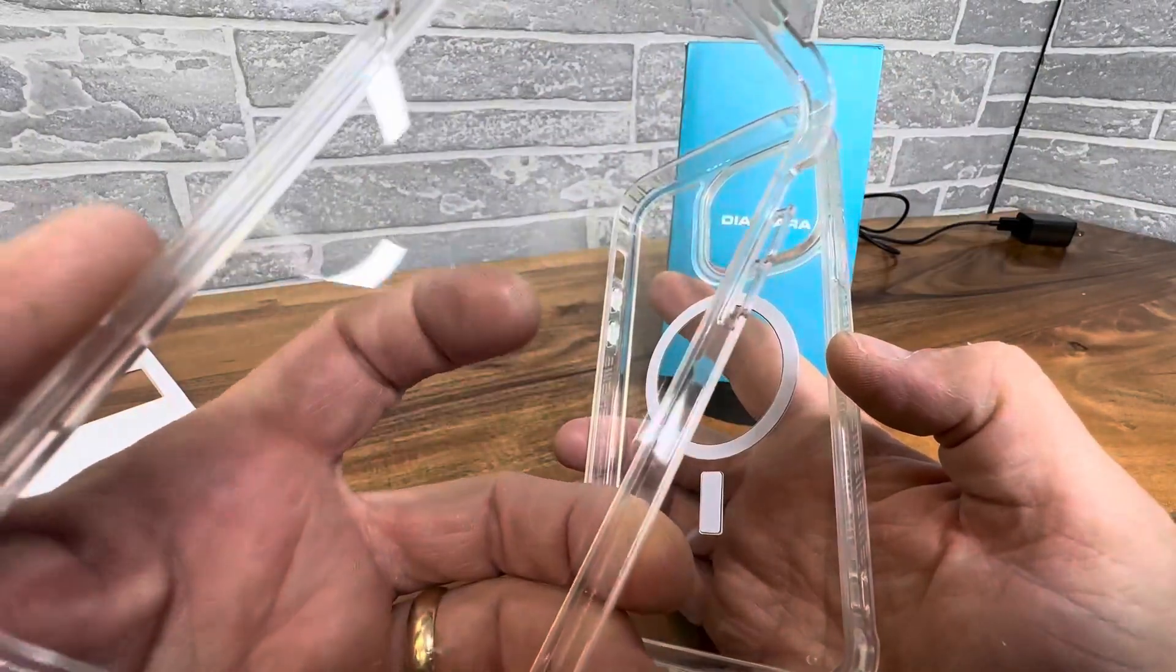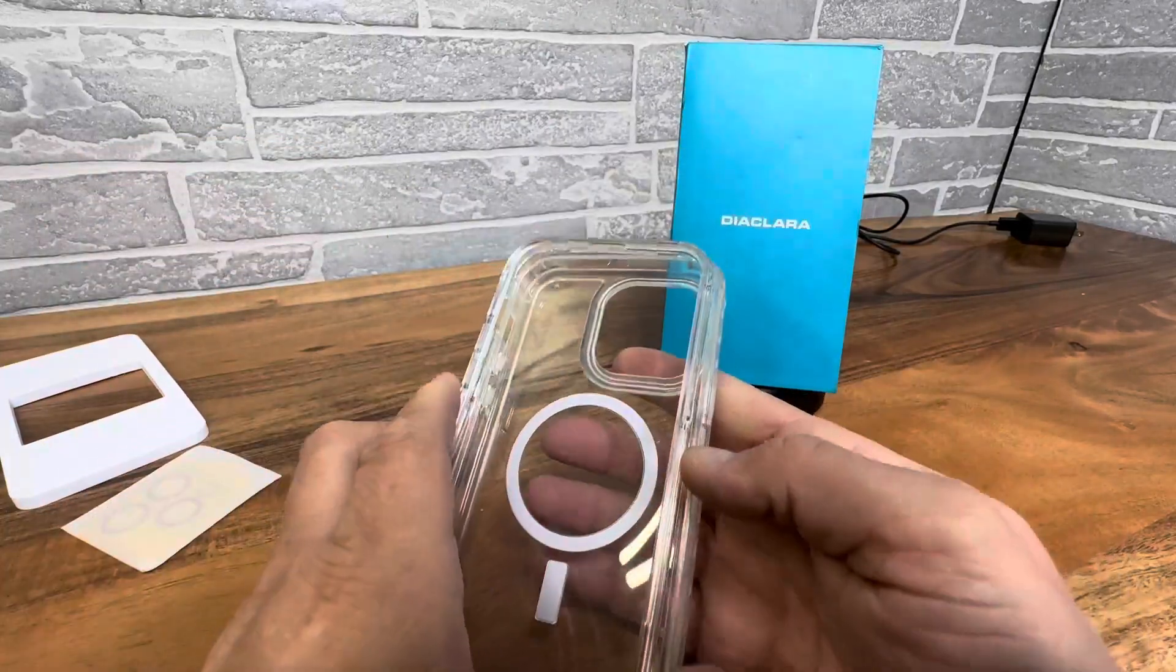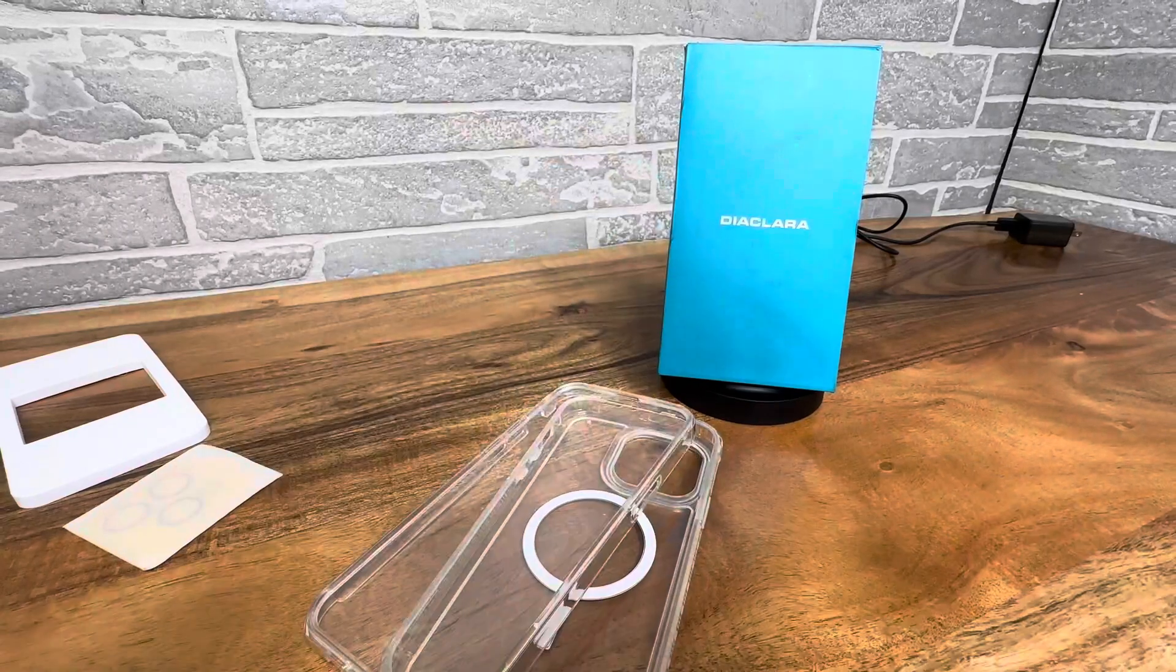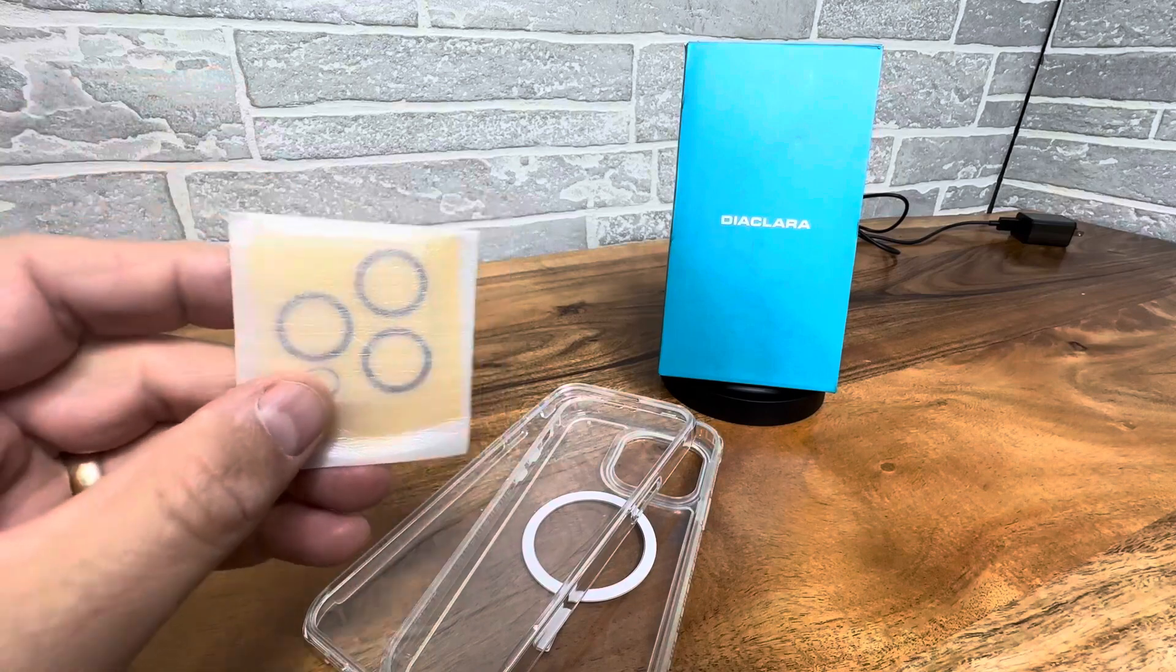Protective screen is built in to the case. So once you put this case on and you put this in the front, it will protect your phone. Really nice comprehensive case—even comes with a camera protector for the cameras.